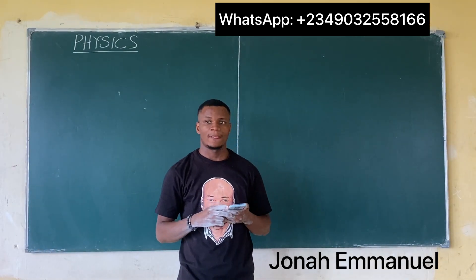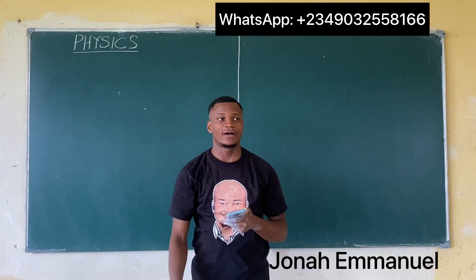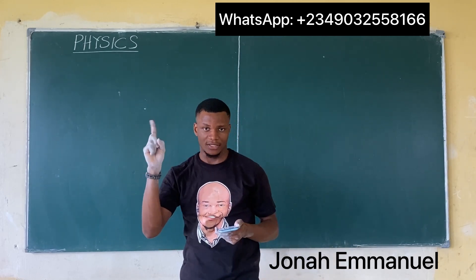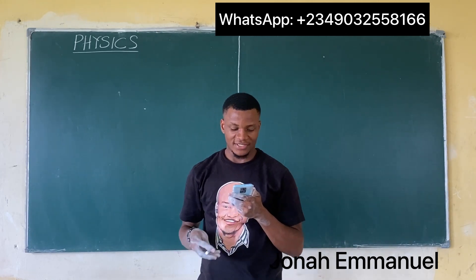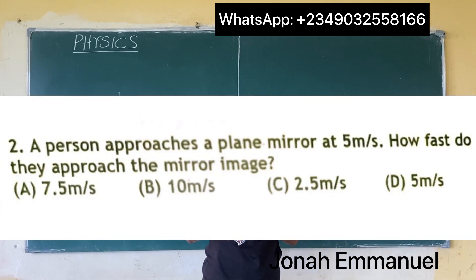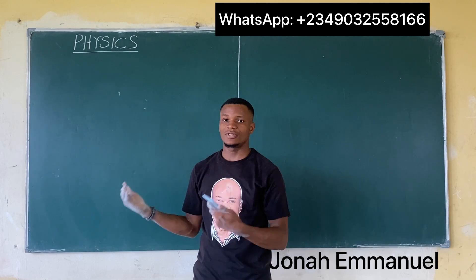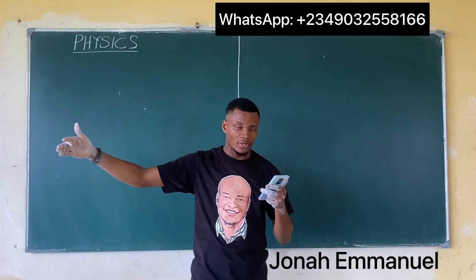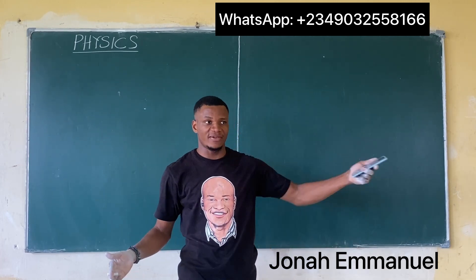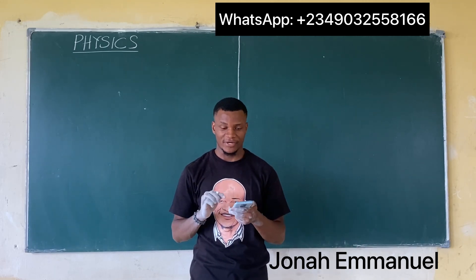Convex mirrors are used as driving mirrors because images formed are direct, virtual, and diminished, so the answer is option A. Another question: a person approaches a plane mirror at 5 m per second. How fast do they approach their mirror image? The answer is also 5 m per second. For a plane mirror, the object is at equal distance from the mirror as the image, so the image also approaches the mirror at the same speed.